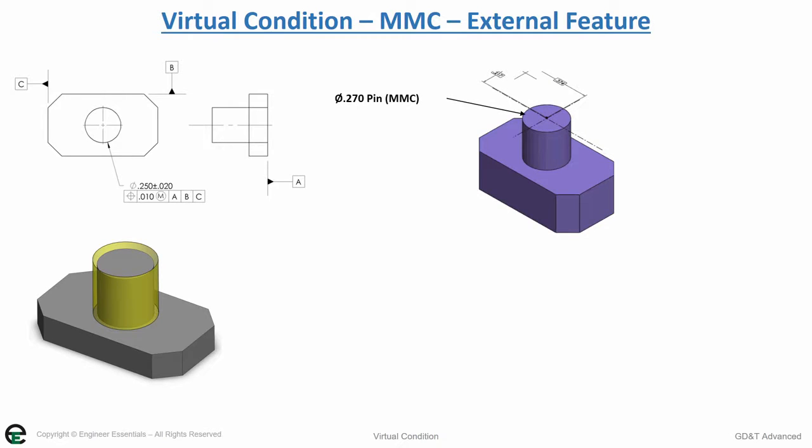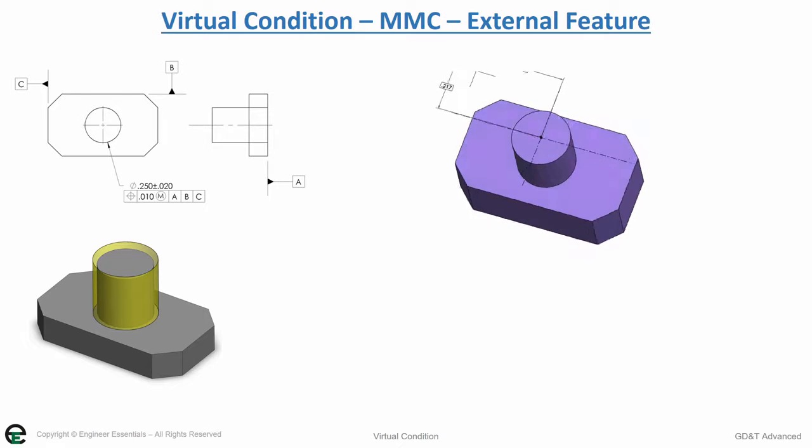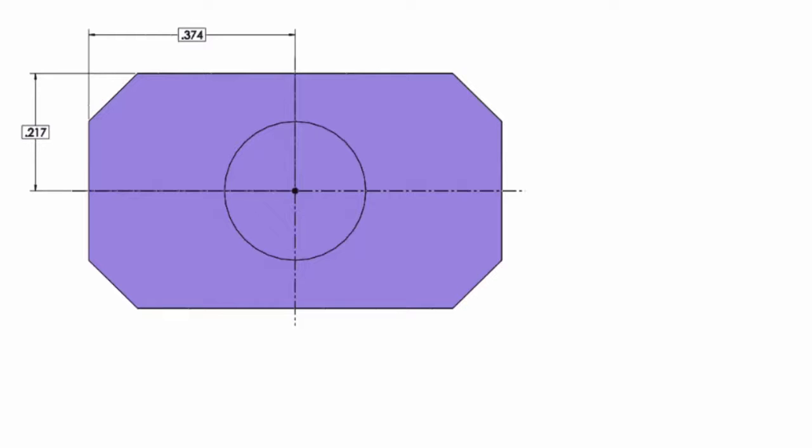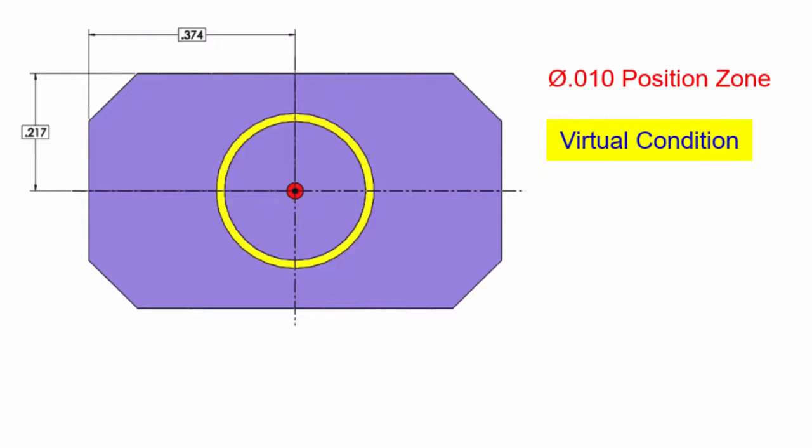It's calculated in a similar way as an internal feature, only now it's the opposite condition. Here what we have is a limit of size around the outer boundary. We have a .010 positional tolerance zone, and the yellow represents our virtual condition.